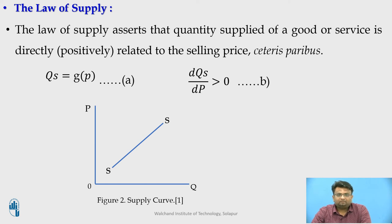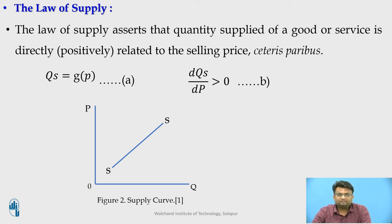Symbolically, the law of supply can be summarized as: Qs = g(P), and dQs/dP > 0. Equation (a) states that the quantity supplied, Qs, is functionally related to price — quantity supplied is a function of price. Equation (b) shows that quantity supplied and price are directly related, meaning they are directly proportional to each other.